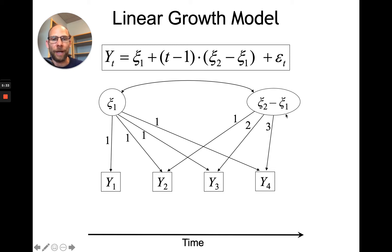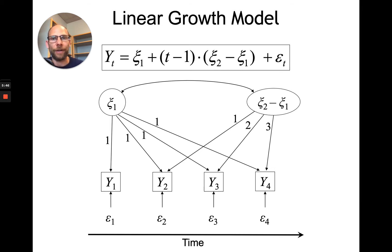We also estimate measurement error variances — the variances of epsilon 1 through epsilon 4. Those variances can be left free to vary across time or constrained to be time-invariant. They represent unreliability, deviations from the linear growth curve, and situation-specific effects present in addition to a trait effect. That's what a linear growth model looks like for four equally spaced time points.